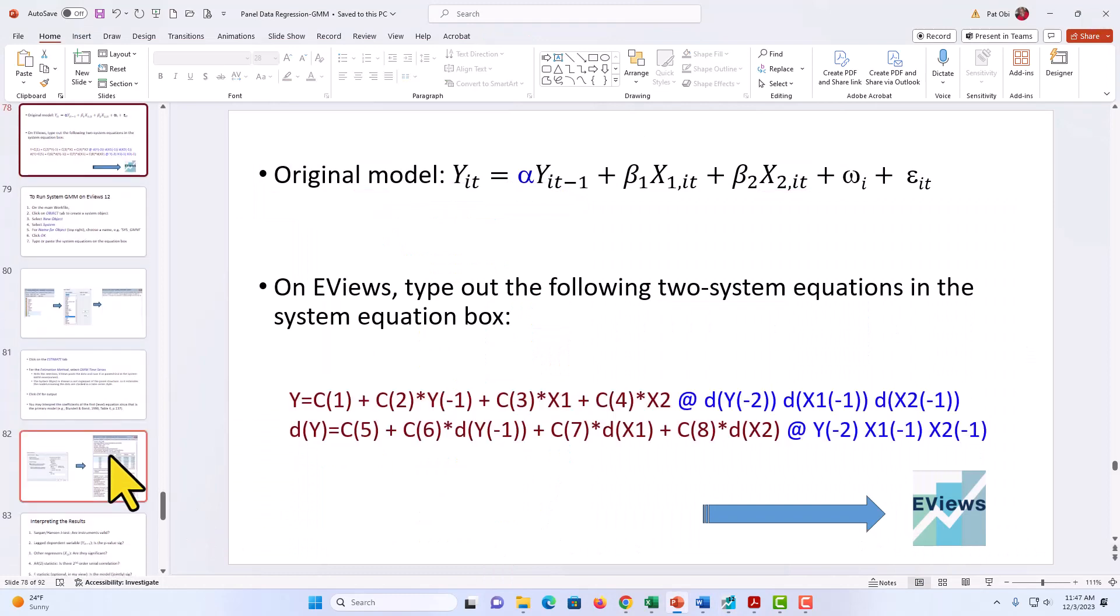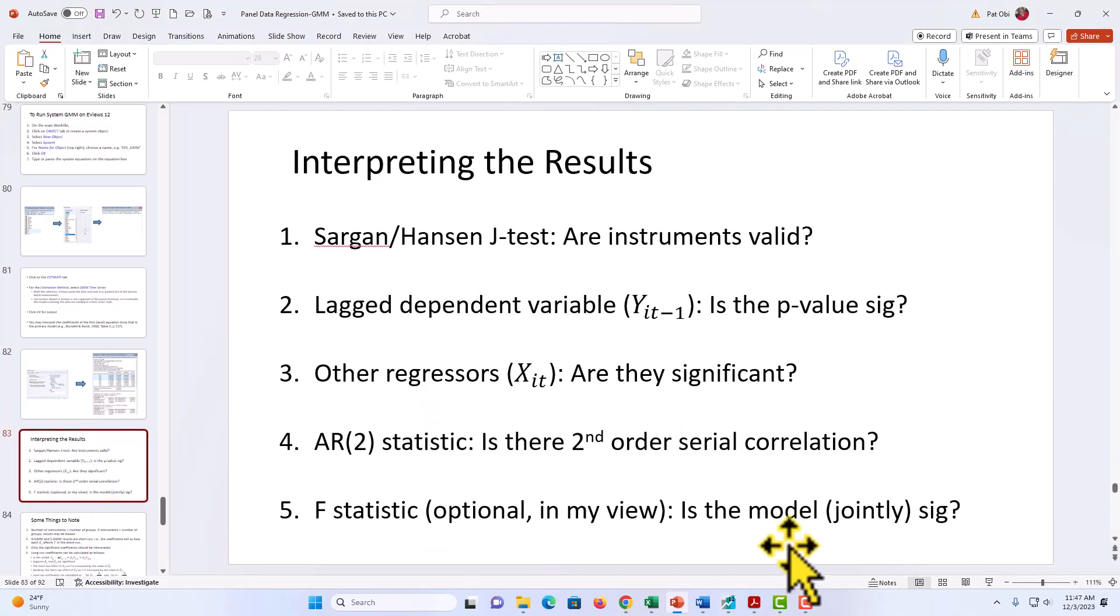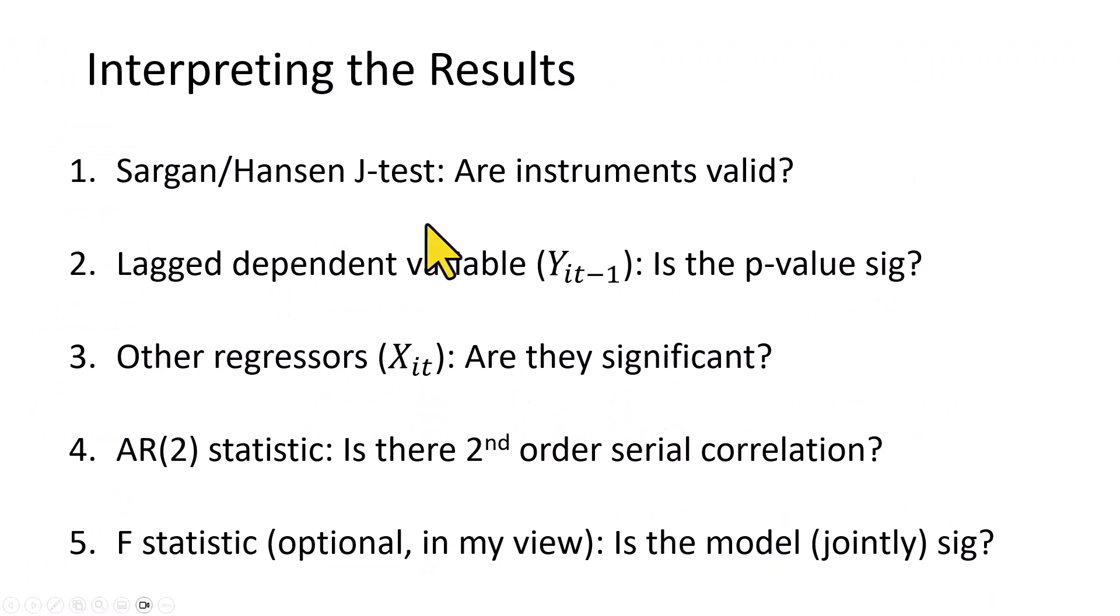And so if I go back here to my PowerPoint to interpret the results, we have to, number one, be assured that the J test of significance confirms that the instruments are valid. Number two, we need to look at the lagged dependent variable to be sure that it is statistically significant. That way we can say something about memory or persistence in the behavior of the dependent variable, as I explained two videos ago. Number three, examine the regressors to be sure that they are statistically significant.